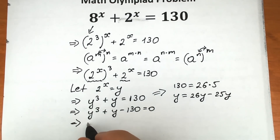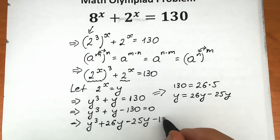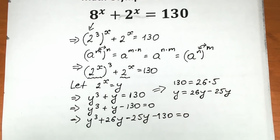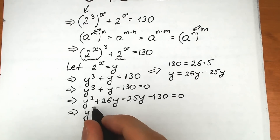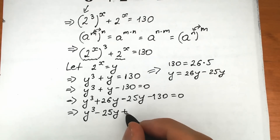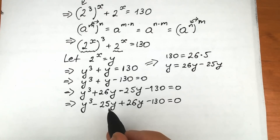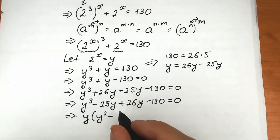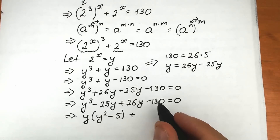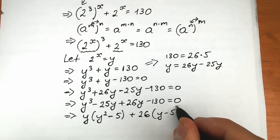So what do we have right here? We have y cubed. Instead of y, let's write that expression — it changes nothing. So we have y cubed plus 26y minus 25y minus 130 equal to zero. Let's rearrange: y cubed minus 25y plus 26y minus 130 equal to zero. From y cubed and minus 25y, we can factor out y. So we have y times (y squared minus 5 squared), and from 26y and minus 130 we can factor out 26, giving y minus 5 inside.